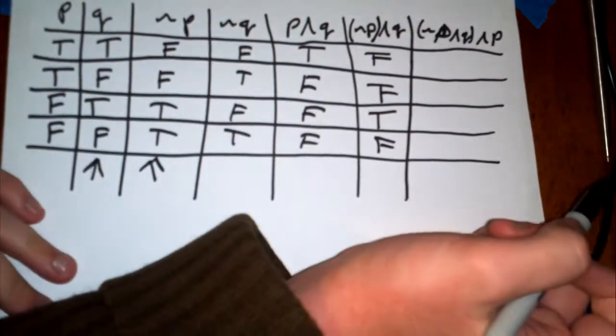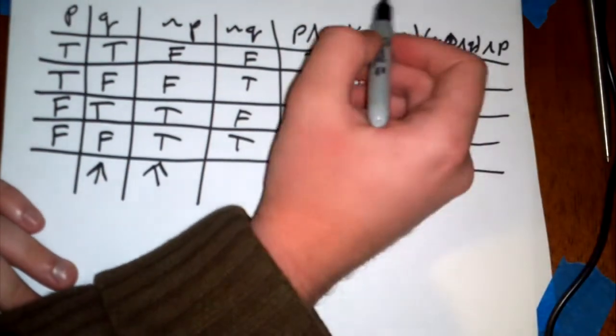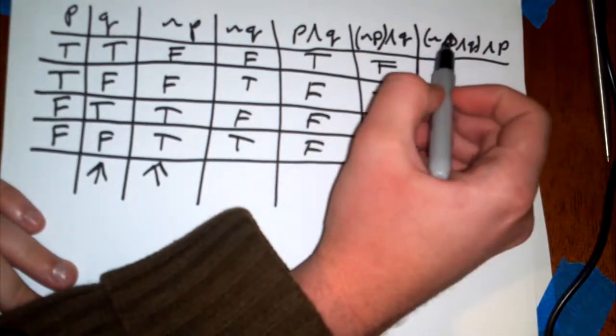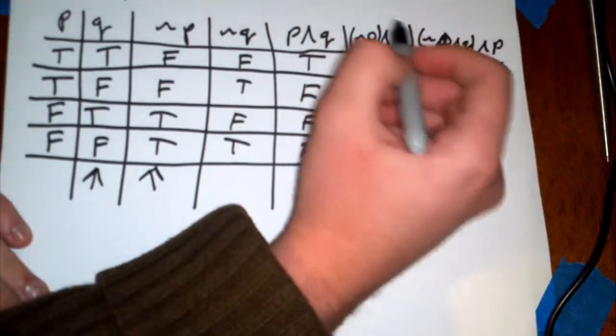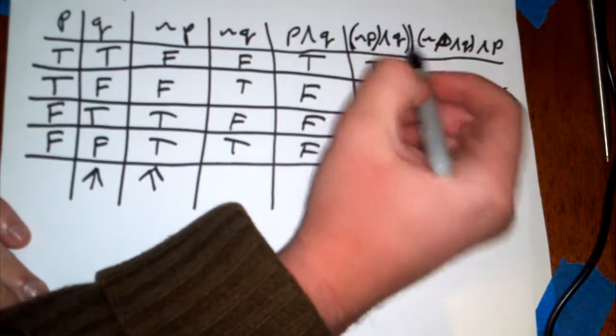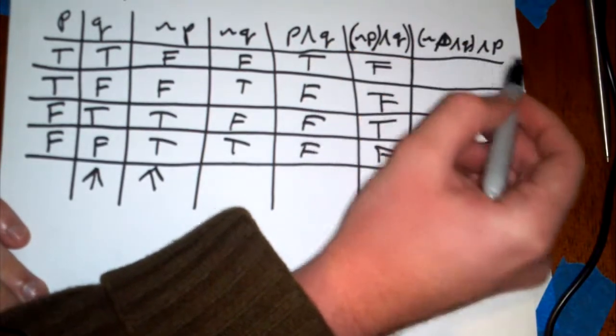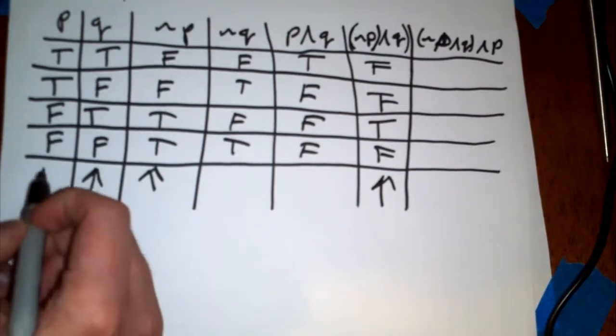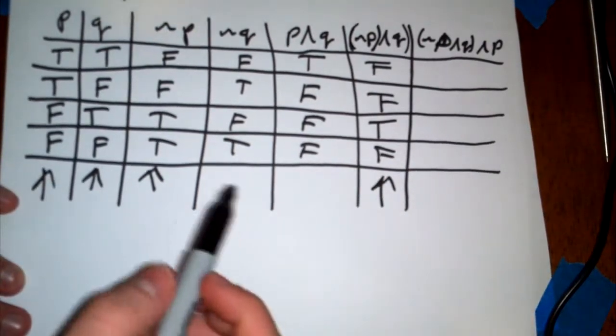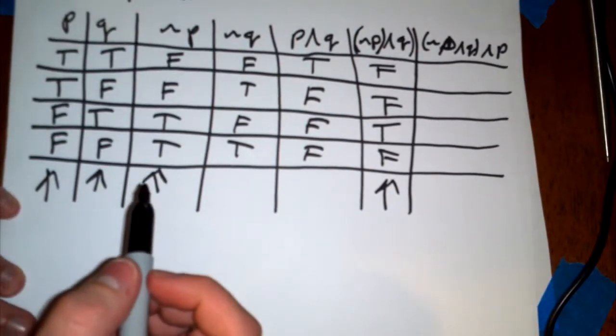So in the last one, we're going to look at this whole part here. This is actually P. My handwriting got a little bit messy on that one. But now we're looking at this complex part. So this one AND a P. So we're looking at, technically, this column here and this one here. And if they're both true on one of these columns, then it's true.